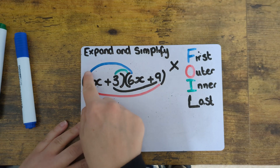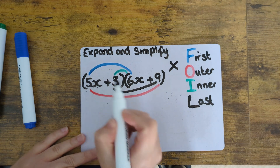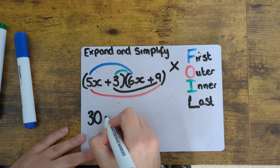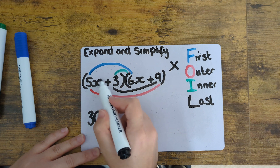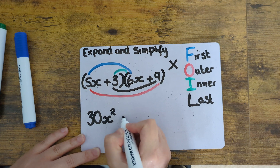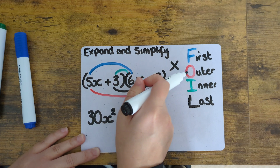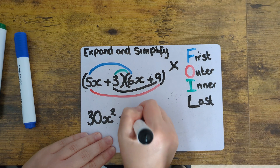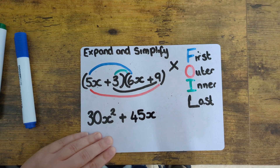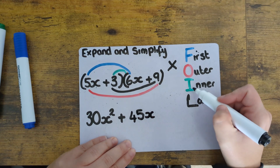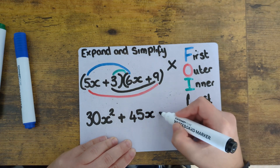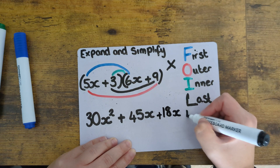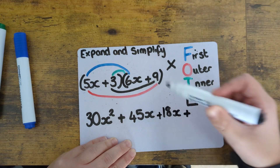The first terms are the 5x and the 6x, so 5 times 6 is 30. Because we've done x times x, the x will be squared. Then we need the outer terms — 5x times 9, so 5 times 9 is 45, and we put the x on the end. Then the inner ones: 3 lots of 6x, which would be 18x. And then finally the last terms — 3 times 9, which is 27.